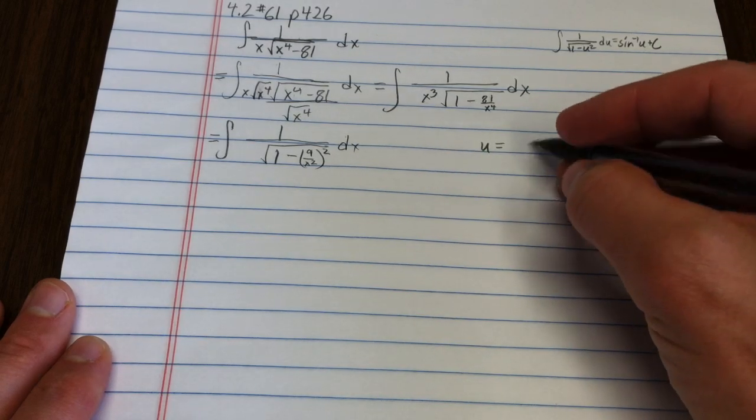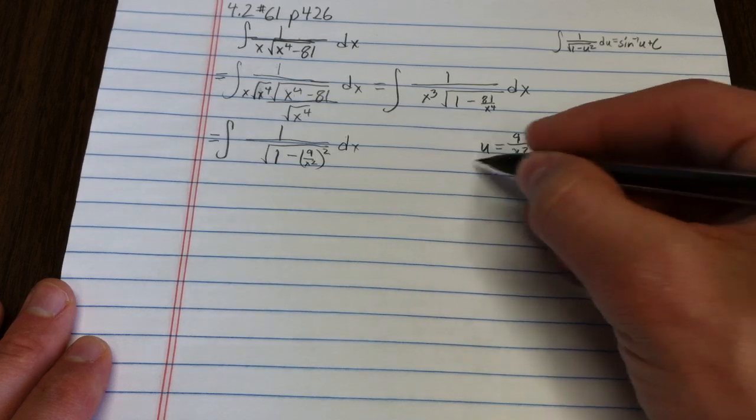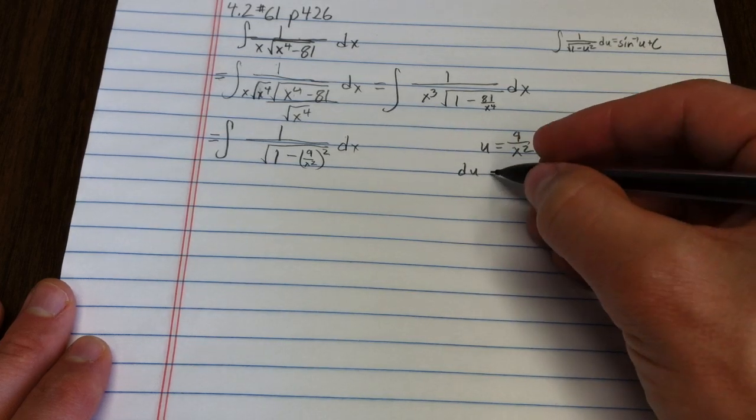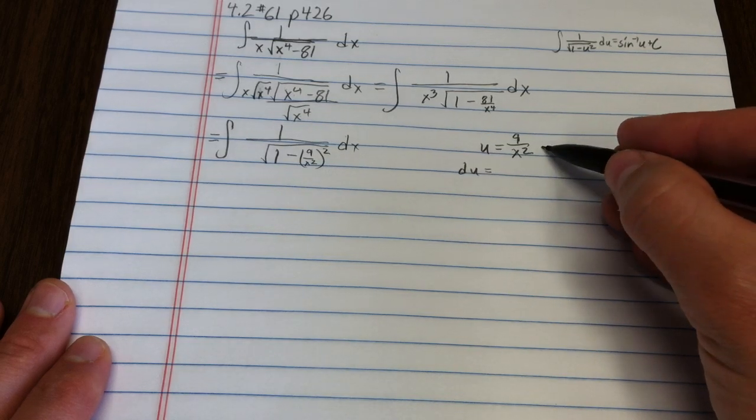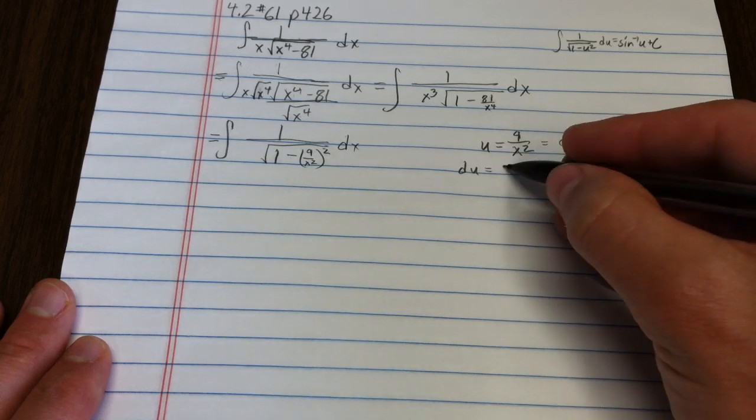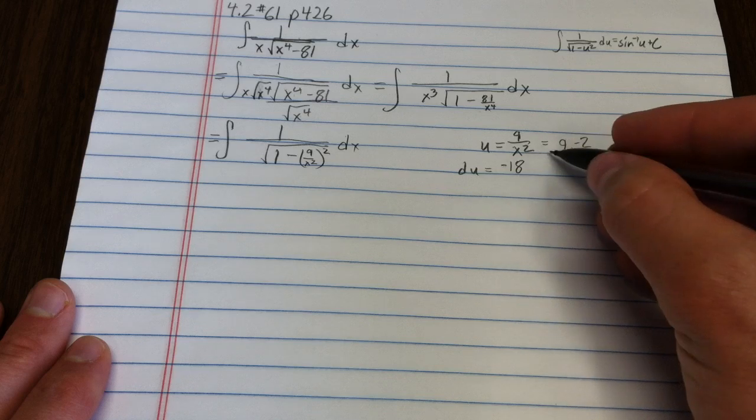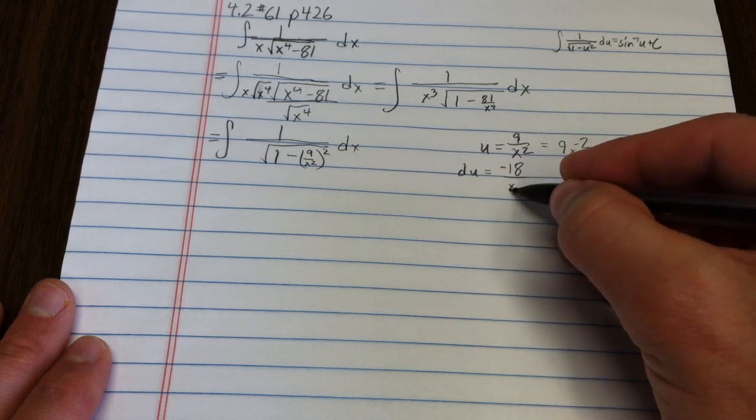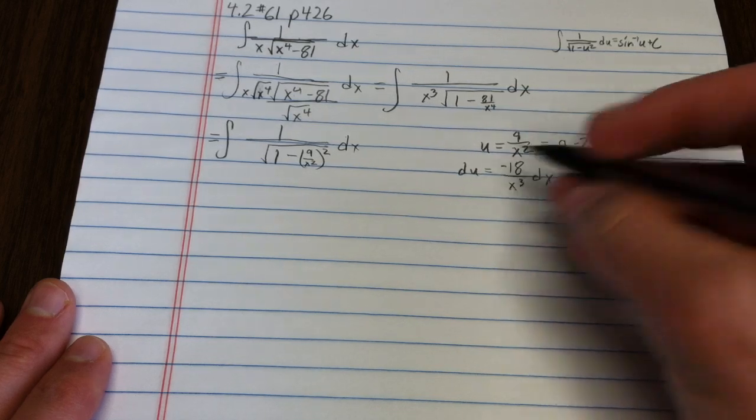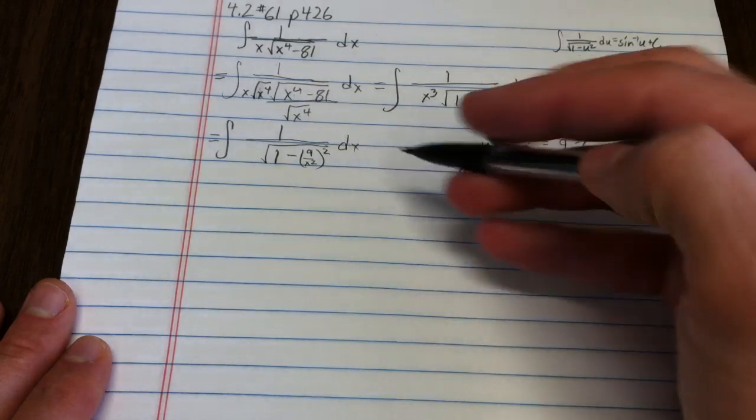So if u is 9 over x squared, du is going to be, you could think about this as being 9x to the negative 2. So that would be negative 18, x to the negative 3, or you could put x to the 3rd dx. So we're not so far off here. We have an x to the 3rd.